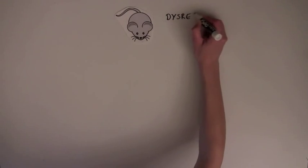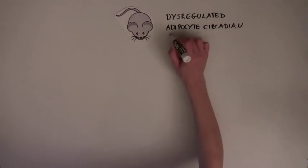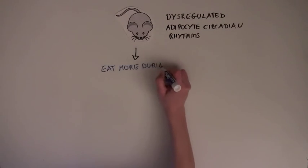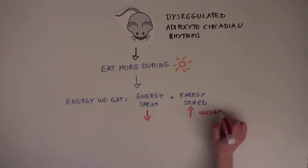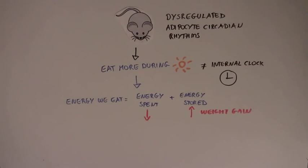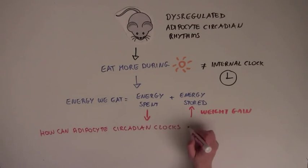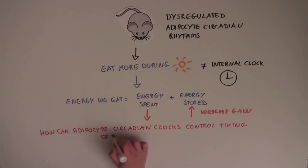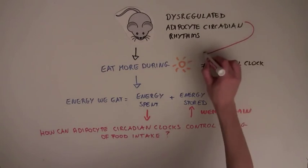So, it seems like these mice with dysregulated adipocyte circadian rhythms eat at a different time of day. This reduces the amount of energy they spend and causes weight gain. So, the scientists were curious to understand how adipocyte circadian clocks could control the timing of food intake that leads to obesity in these mice.